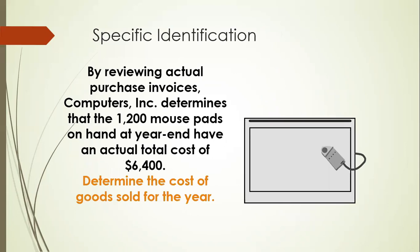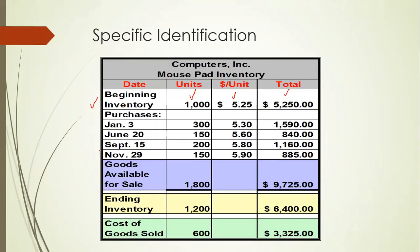For example, with the specific identification method, you identify the inventory based on the specific date on which you purchased it. For example, on January 3rd you purchased 300 units at a price of $5.30.